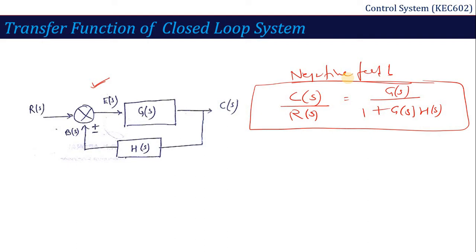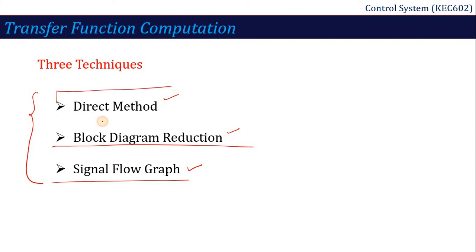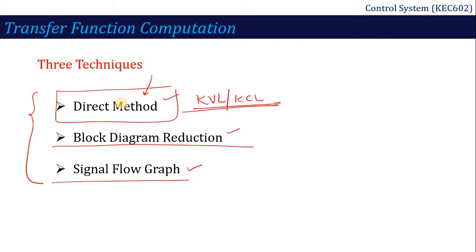So that covers the transfer functions of both open loop and closed loop systems. If we go further, there are three types of computation techniques for deriving transfer functions throughout this unit: the first method is the direct method, the second is block diagram reduction (BDR), and the third is the signal flow graph (SFG). In the direct method, we use KVL, KCL, and direct formulas.